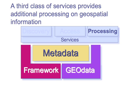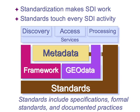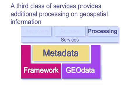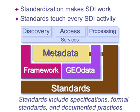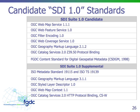The third type of services provides additional processing on geospatial information. This can be web coordinate transformation services or fusion overlay services, but it's less mature in terms of standardization within the geospatial world. It is being applied in a number of places and is increasingly present within SDIs. Standards make the SDI work and touch on every SDI activity. Standards include specifications, formal standards, and documented best practices.